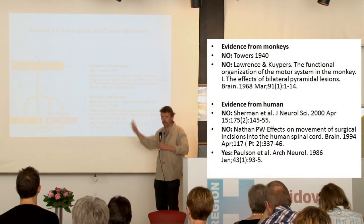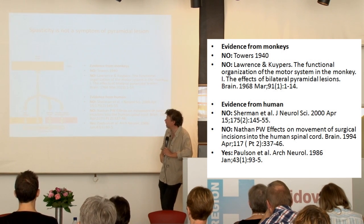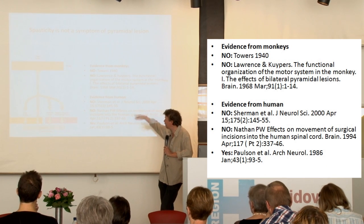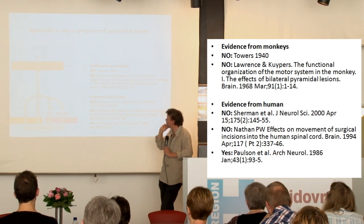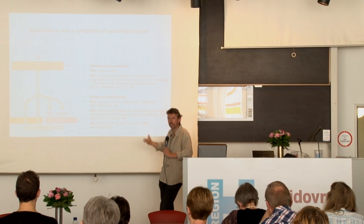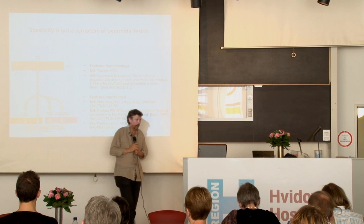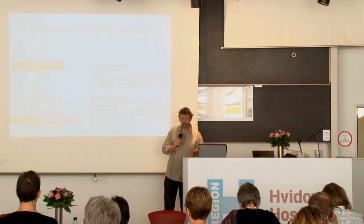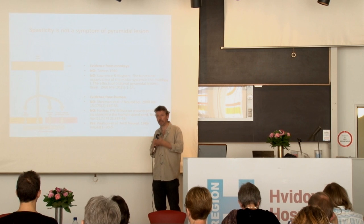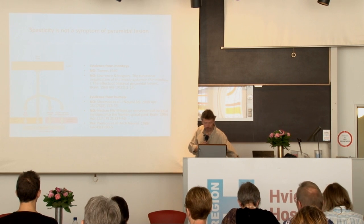This actually goes back to 1940, but that study was completely forgotten until Lawrence and Kuybers demonstrated it in 1968 in animals. Since then there have been quite a lot of human studies also demonstrating that you actually don't develop spasticity if you have a lesion of the corticospinal tract — it requires lesion of these indirect pathways additionally or instead. So the link between paresis and spasticity need not be there, which I think is also an important point to communicate.